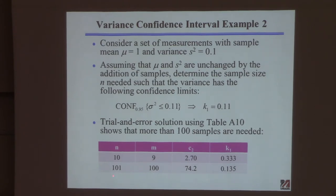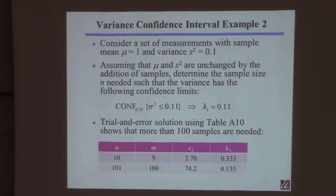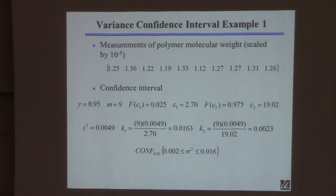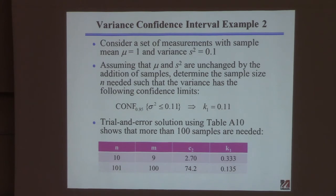At that point, even with 101 samples it's not enough. The table has an entry for infinite samples but I didn't use it — so satisfying this confidence level requires more than 100 experiments. Compare that to the mean case where just 7 experiments satisfied ±10% confidence. For the variance, you need more than 100 experiments. It's very hard to get a tight confidence interval on the variance — you need lots of samples.